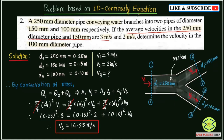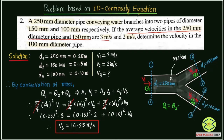This is a very important question. We should always look for conservation of mass — whatever mass enters across section 1 will leave from sections 2 and 3. Discharge Q1 enters, and Q2 and Q3 leave. By conservation of mass, Q1 = Q2 + Q3. Using this equation, we can easily find the unknown velocity V3.